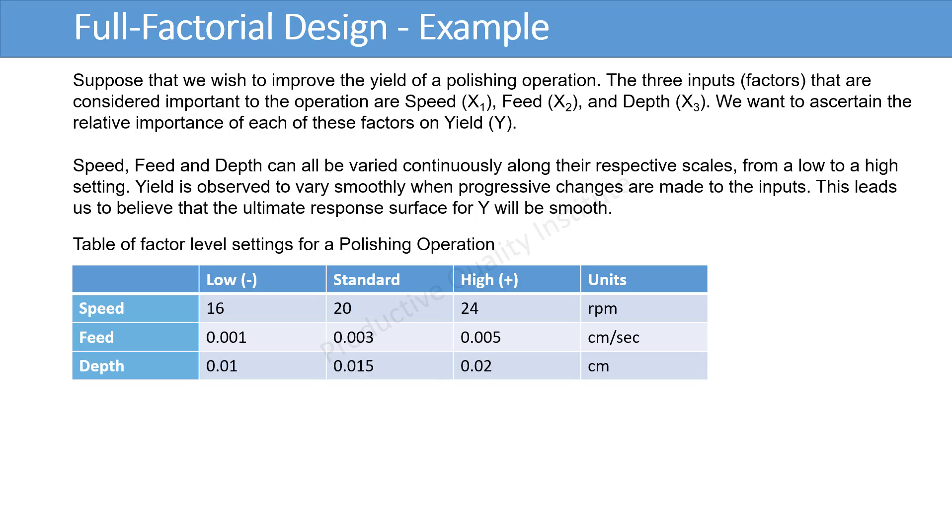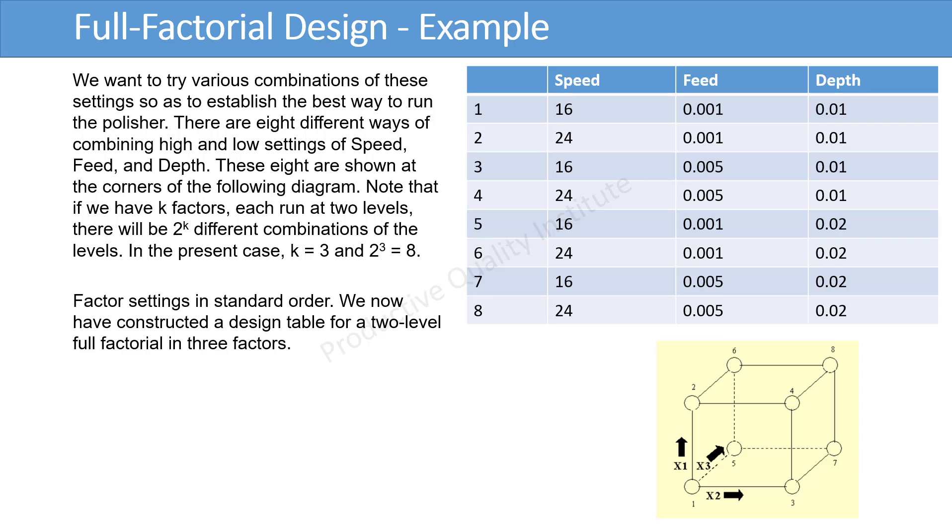Table of factor level settings for a polishing operation. The low speed is 16 revolutions per minute, the standard is 20 revolutions per minute, while the high is 24 revolutions per minute. The low feed is 0.001 centimeters per second, the standard is 0.003 centimeters per second, and the high is 0.005 centimeters per second. The low depth is 0.01 centimeters, the standard is 0.015 centimeters, and the high is 0.02 centimeters. We want to try various combinations of these settings so as to establish the best way to run the polisher.